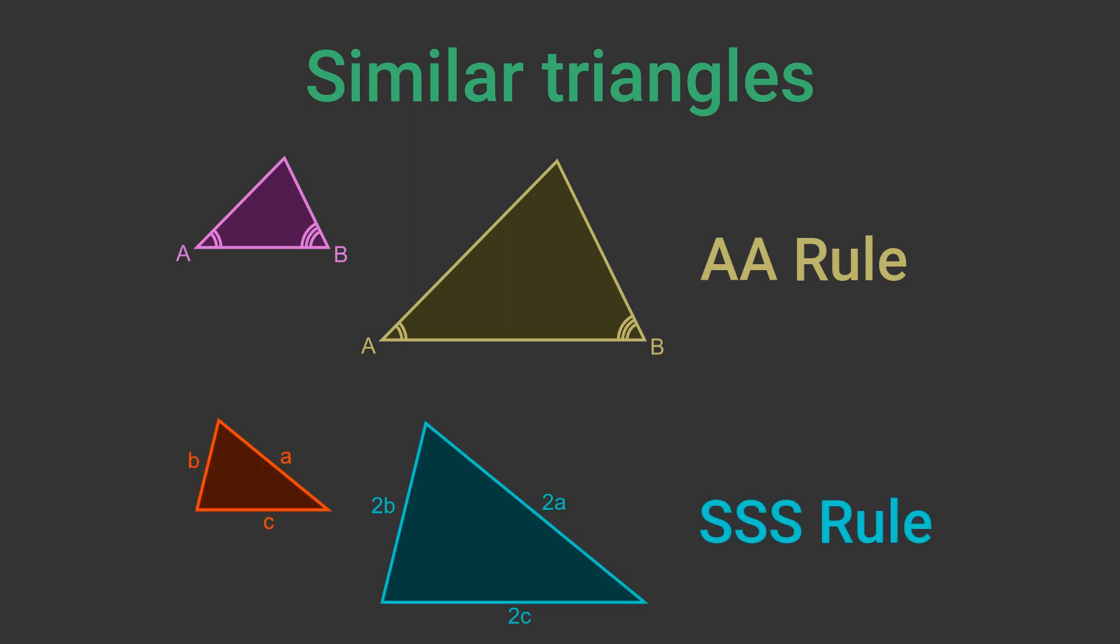Alternatively, if two triangles have all sides that are in the same proportion they are similar. This is called the SSS rule. In this example each side of the large triangle is twice the corresponding side of the small triangle so the triangles are similar.